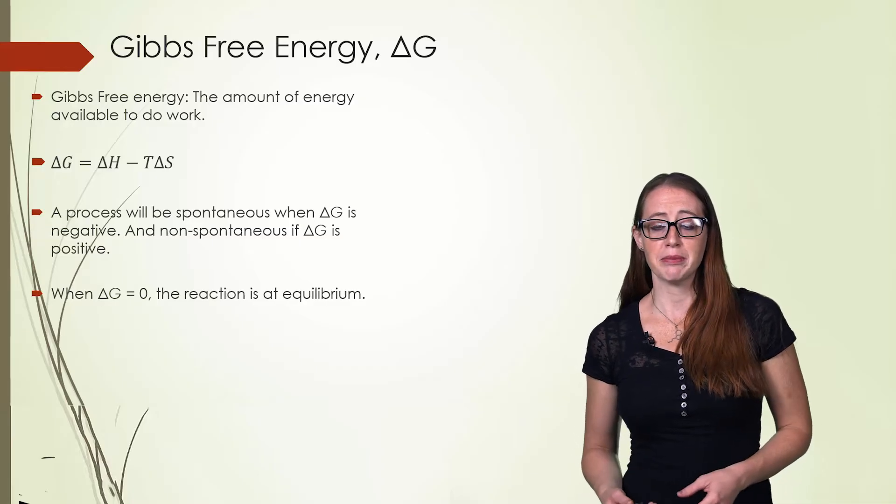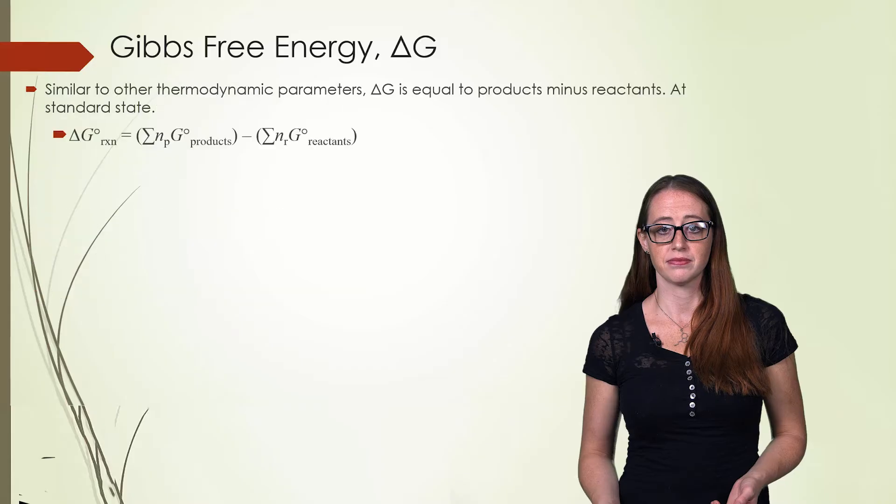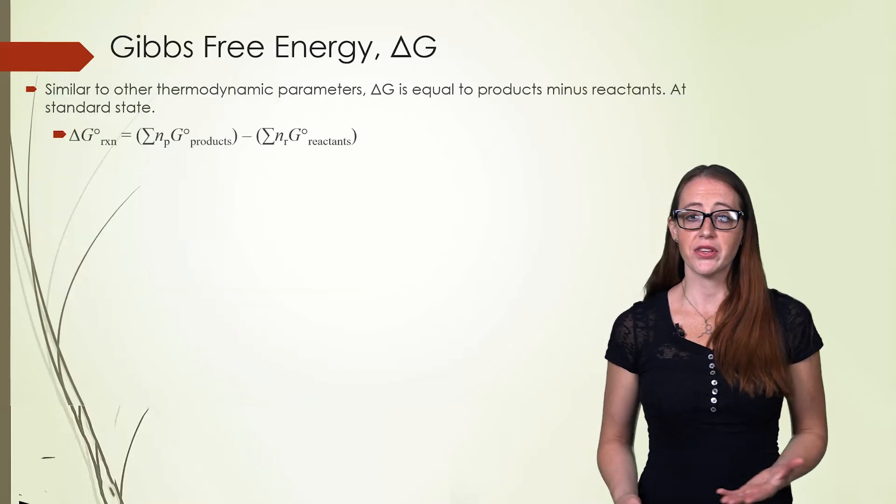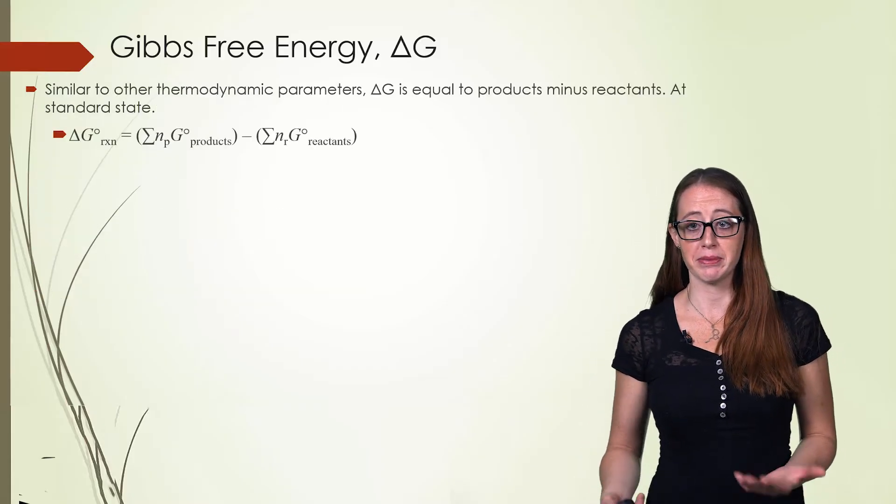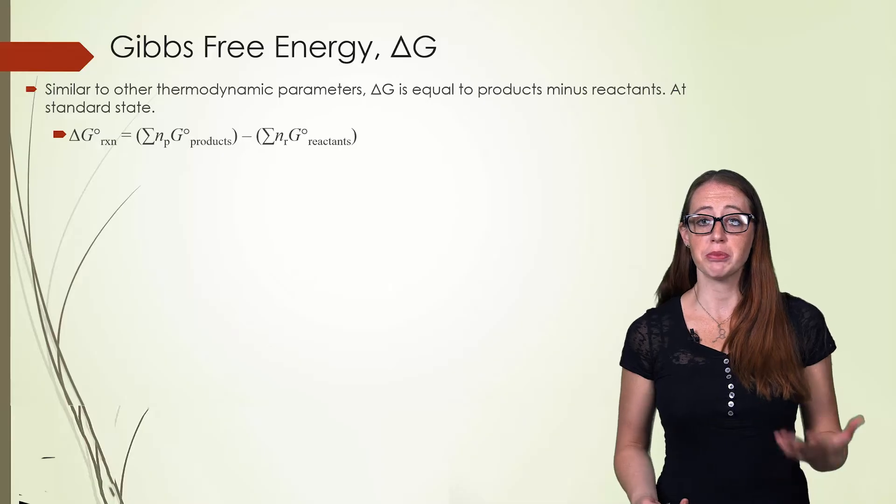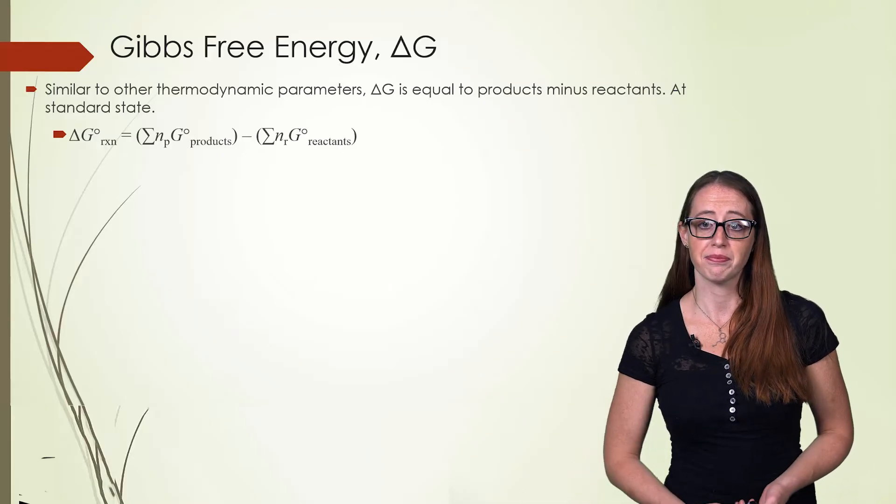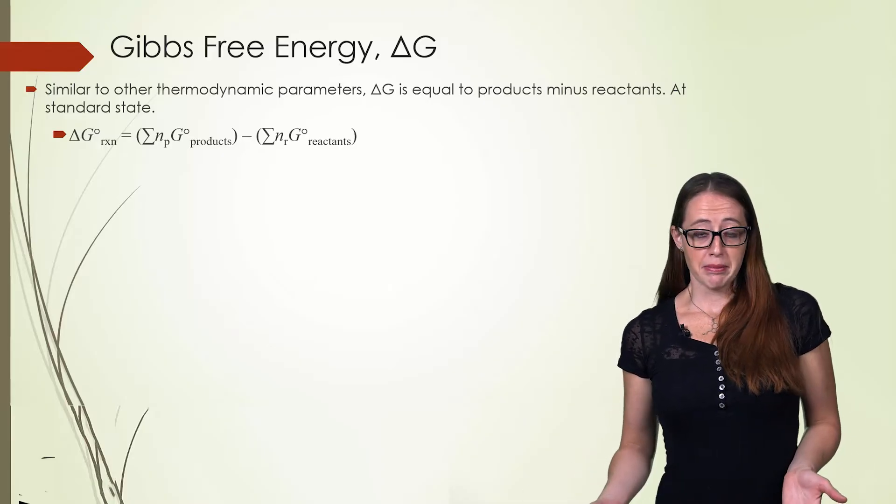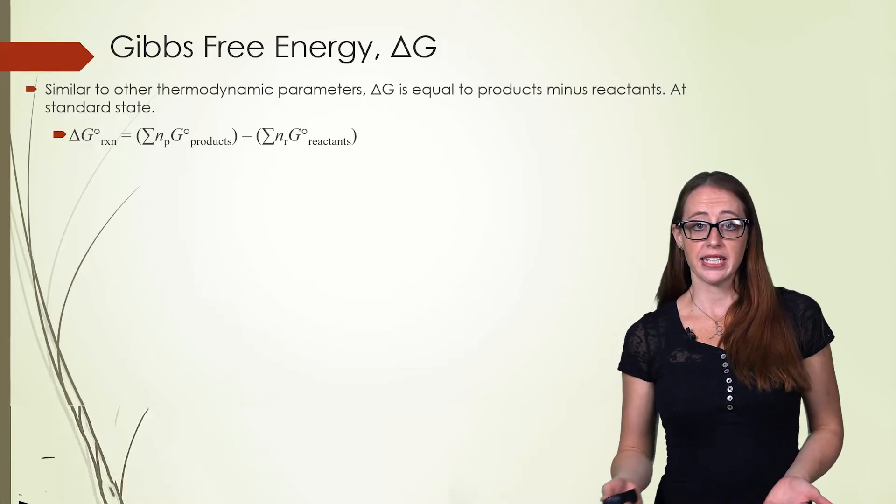Now let's talk about the mathematics of how to calculate this. Just like our other thermodynamic parameters that we've been discussing, our ΔG is equal to the products minus the reactants, remembering to multiply by the coefficients, just like we did for ΔH and ΔS.